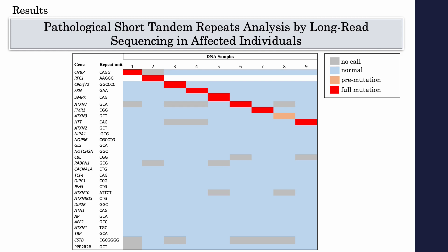In addition, long-read whole-genome sequencing enabled the detection of STR sizing in 30 different loci in each individual. Light blue represents normal, orange represents premutation, and red represents the full expansions that were detected. Also, no-calls were obtained — shown in grey — and these are probably due to low read depth at those regions.